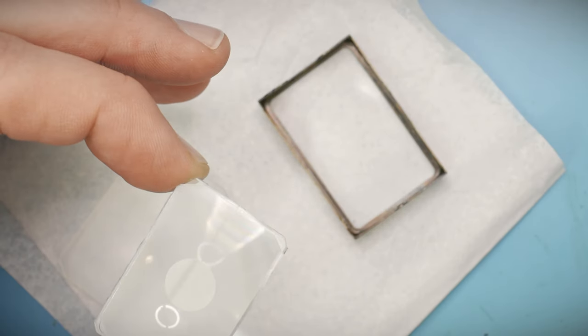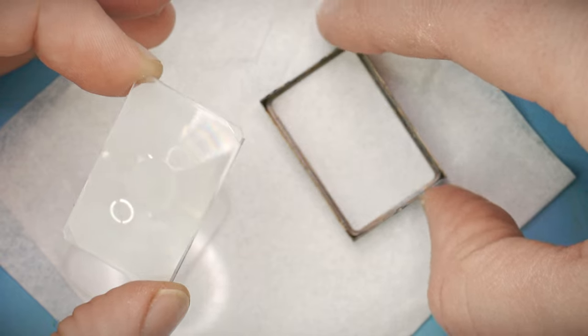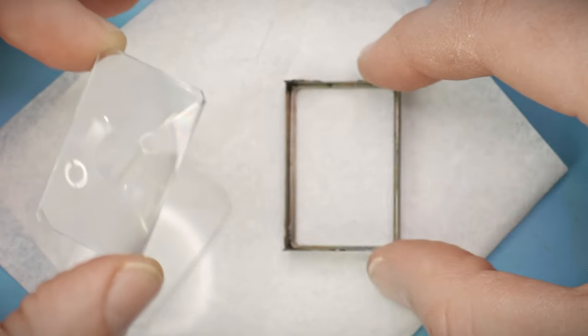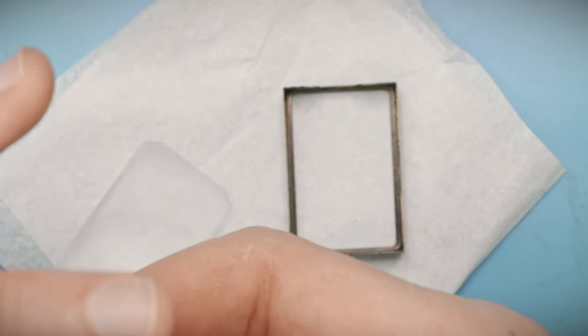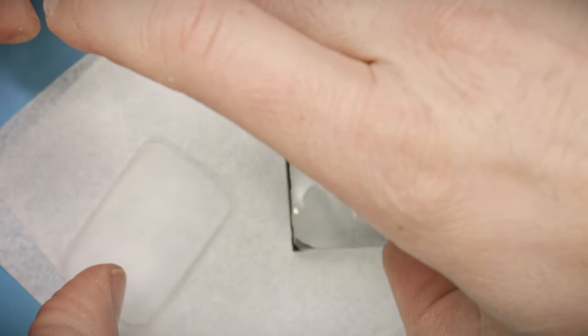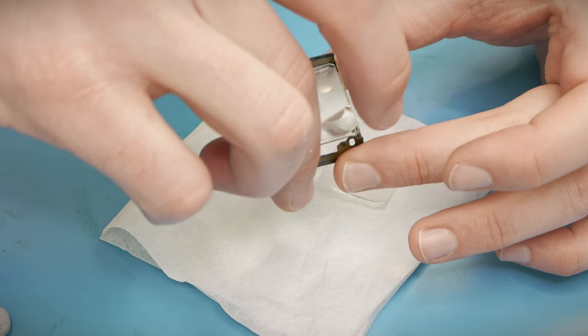It's a bit difficult to see but the Fresnel lens does have two distinct sides and the orientation does matter. The side with the circular ridges should be facing up and be in direct contact with the matte surface of the ground glass.